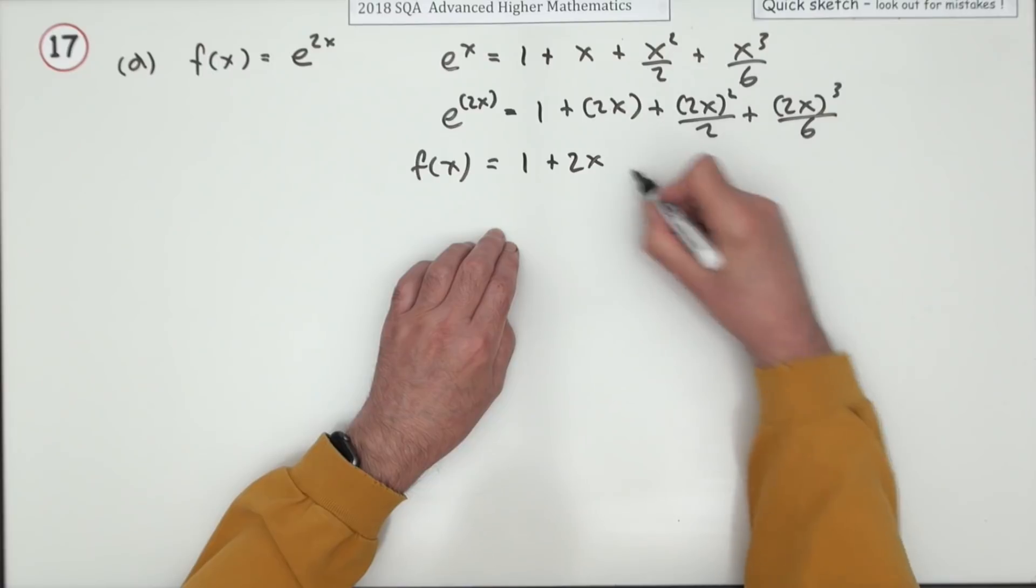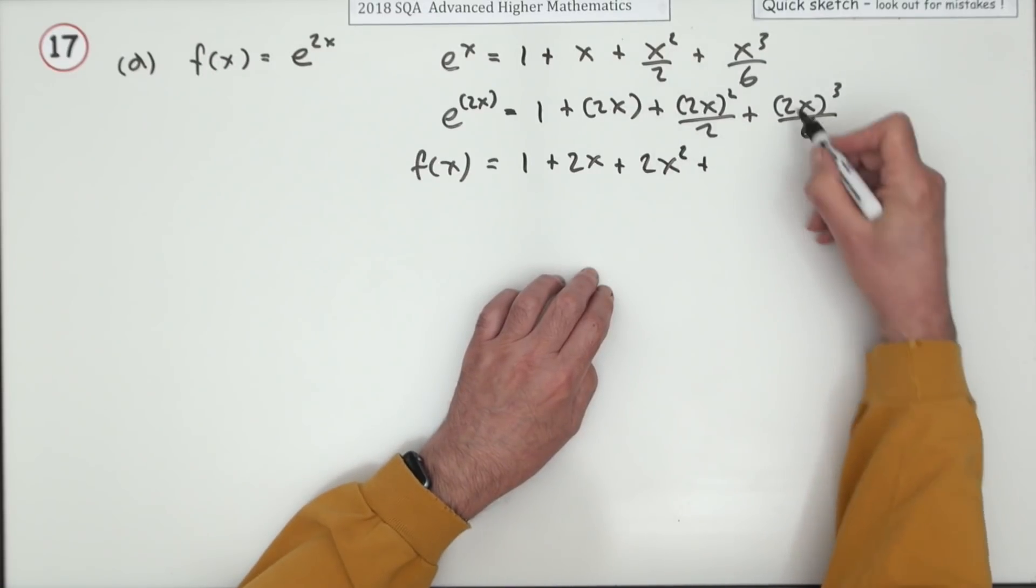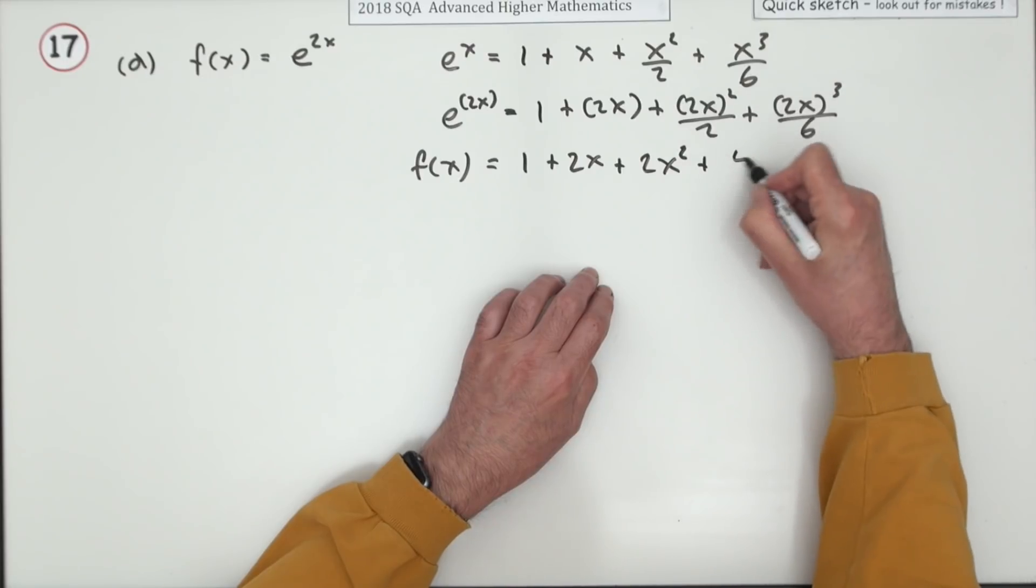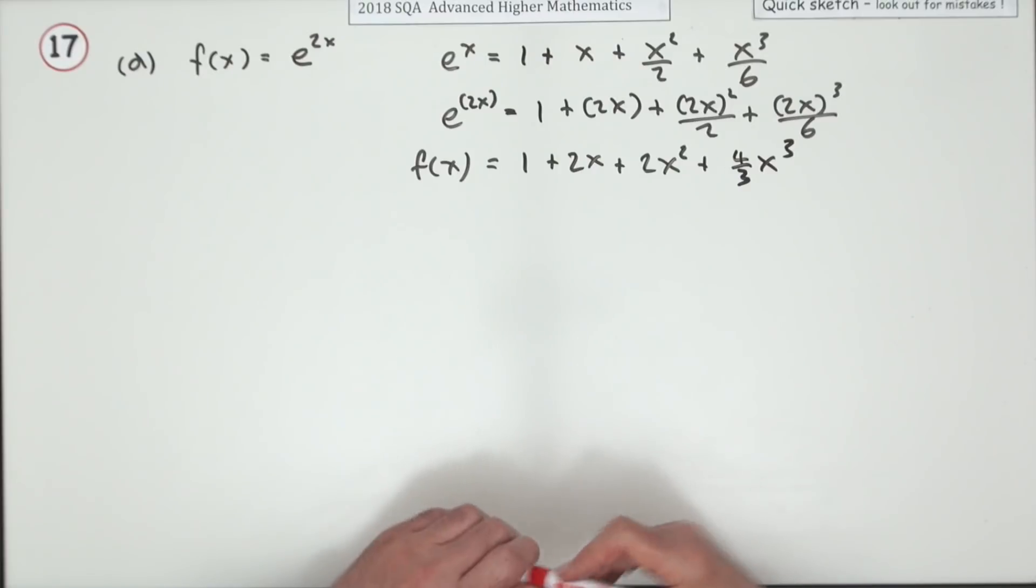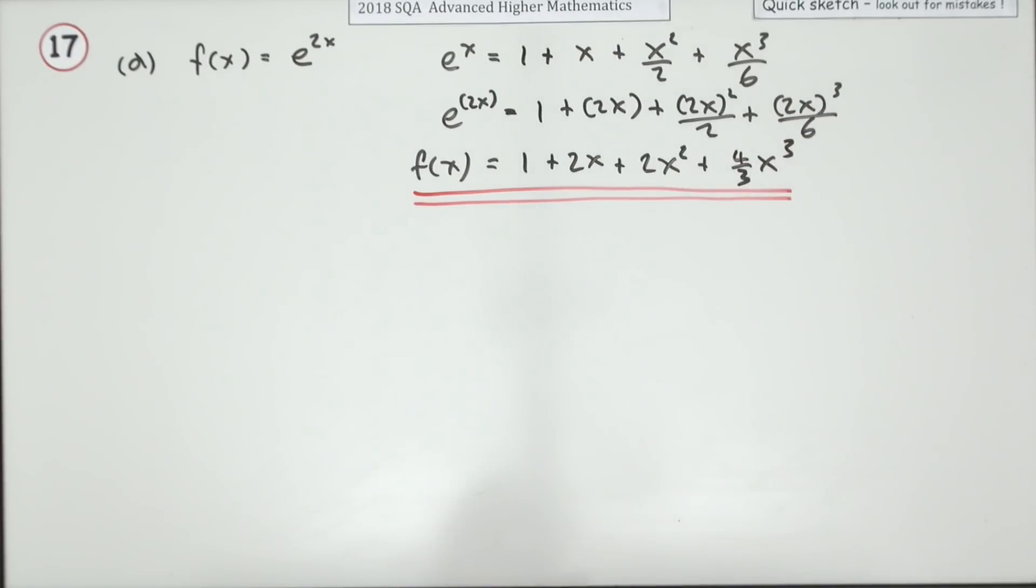Now that's just going to leave 1, 2 on top, so it's also 2x squared plus that's 8 over 6, that's 4 over 3. 4 upon 3 x cubed. Doing that gets you the first two marks.